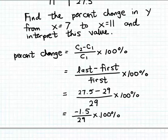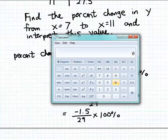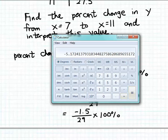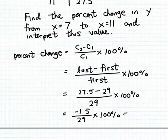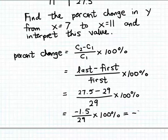At this point it's helpful to use a calculator. We have negative 1.5 divided by 29, which gives us approximately minus 0.0517. Multiplying by 100%, our resulting percent change is minus 5.17%, rounded to a couple of decimal places.